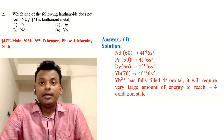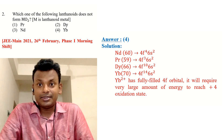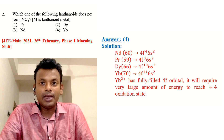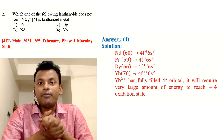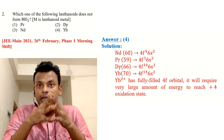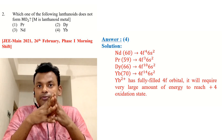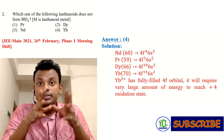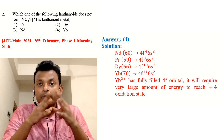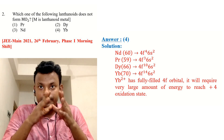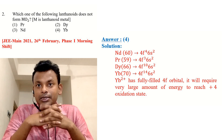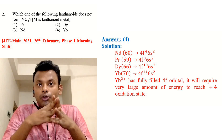Nd (Z=60) has electronic configuration 4f⁴ 6s²; Pr (Z=59) has 4f³ 6s²; Dy has 4f¹⁰ 6s²; and Yb has 4f¹⁴ 6s². Yb²⁺ loses two electrons, giving a fully-filled 4f orbital. It would require a very large amount of energy to reach the +4 oxidation state. So option 4 is the right answer.